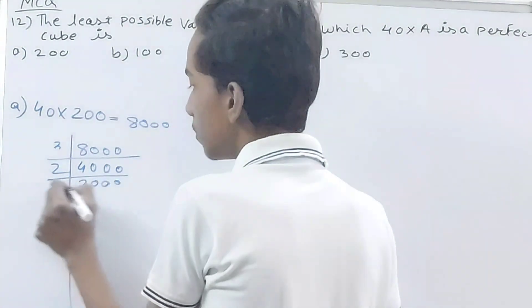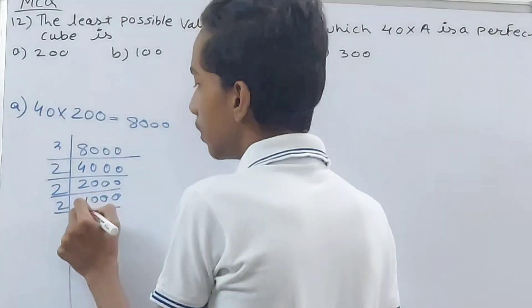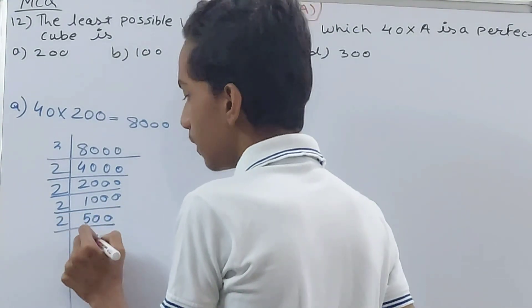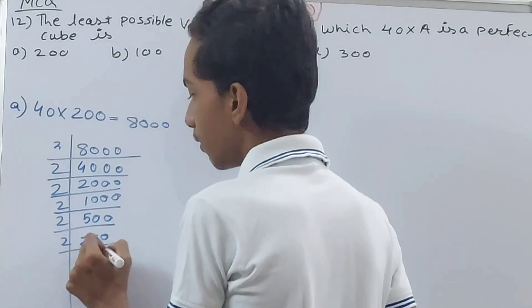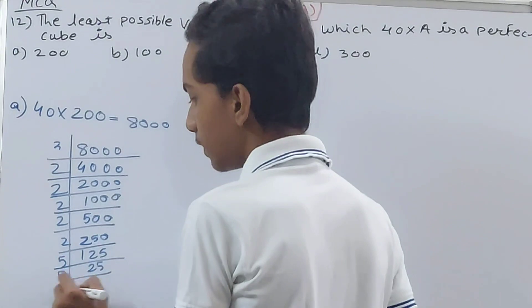So 2 here, 4000 here. 2, 2000. Again 2, 1000. And 2, so 500. 2, 250. 2, 125. 5, 25. 5, 5 and at last 5.